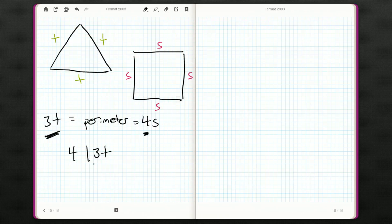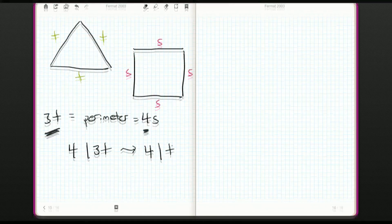And no part of 4, I know 4 is 2 times 2, none of those divide 3. So it's pretty quick to see that 4 must divide our side length t. And this might help us in narrowing down our possible choices for t.